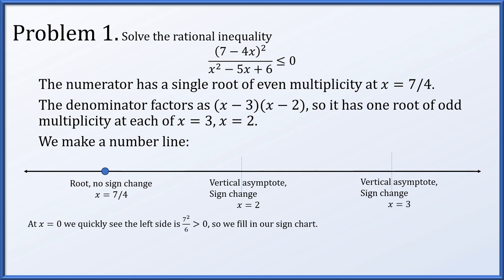We test x equals 0: plugging in gives 7 squared over 6, which is positive. Since x equals 0 is to the left of all the critical values, the left segment is positive. Because we do not change sign at the even-multiplicity root, the next segment is also positive. We then change sign at the vertical asymptote, becoming negative, and change sign again to become positive.